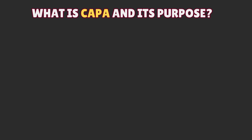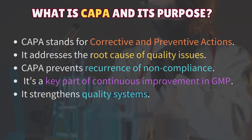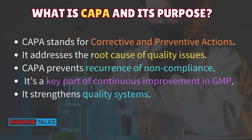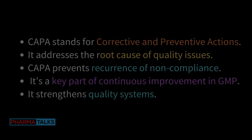What is CAPA and its purpose? CAPA stands for Corrective and Preventive Actions. It addresses the root cause of quality issues. CAPA prevents recurrence of noncompliance. It's a key part of continuous improvement in GMP. It strengthens quality systems.